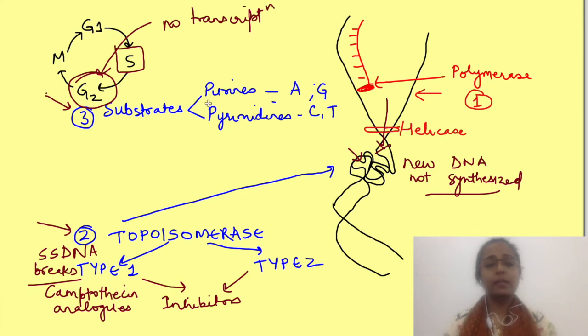Then there are topoisomerase 2 inhibitors. These are epipodophyllotoxins, example is etoposide, which act just like topoisomerase 1 inhibitor such that breaks in DNA occur but they are not resealed. So cells are arrested in G2 phase.